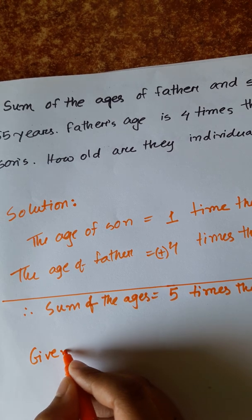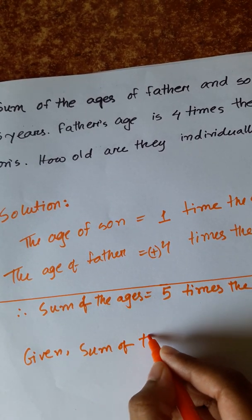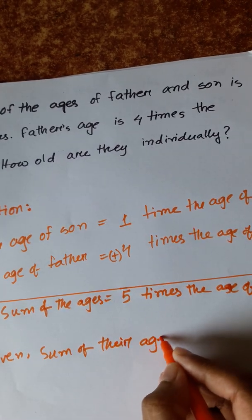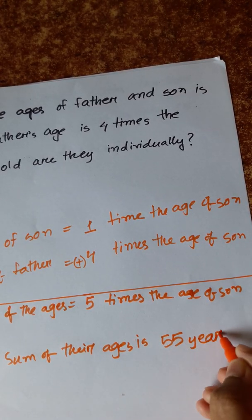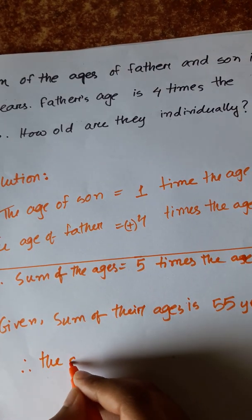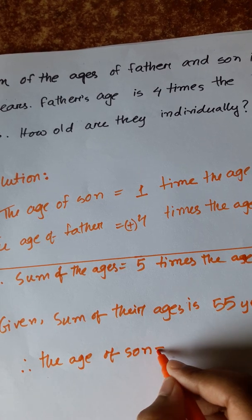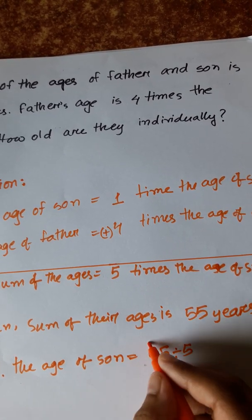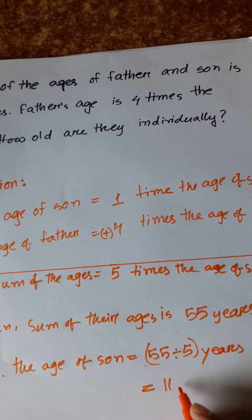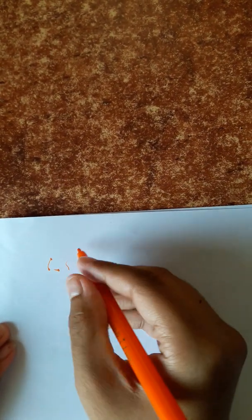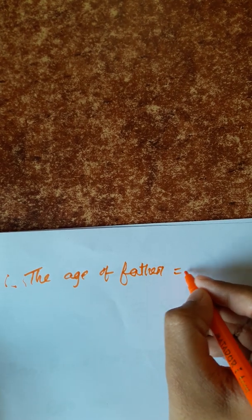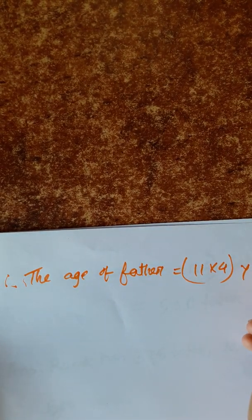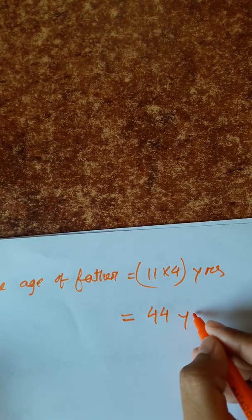Given: sum of their ages is 55 years. Therefore the age of son is 55 divided by 5 equals 11 years. Therefore the age of father is 11 into 4 equals 44 years.